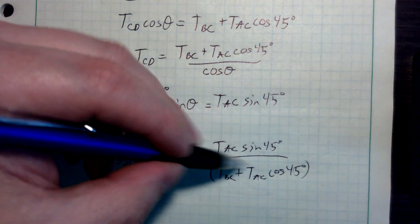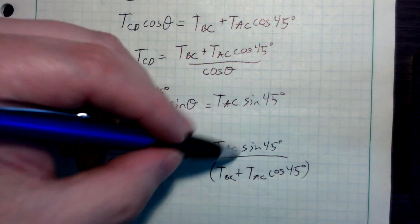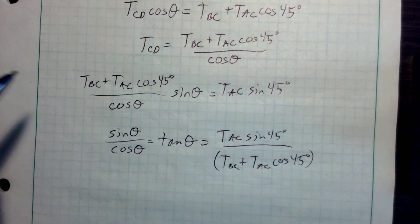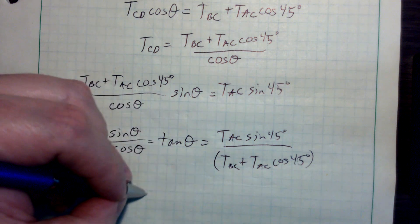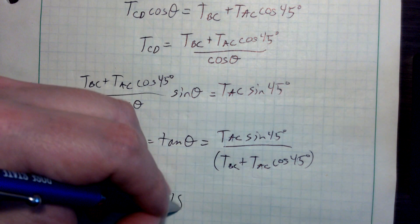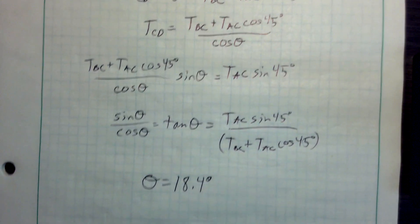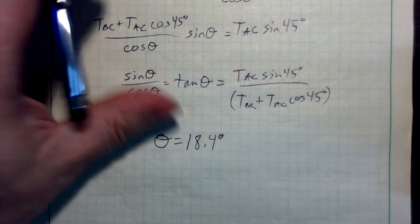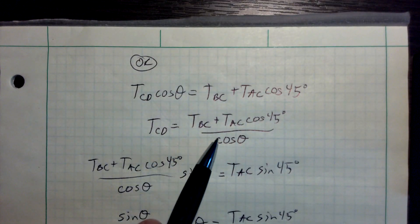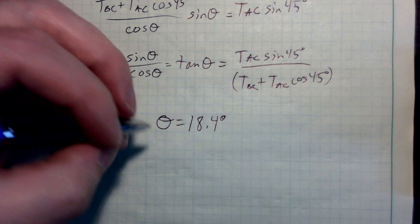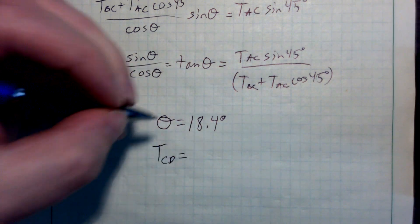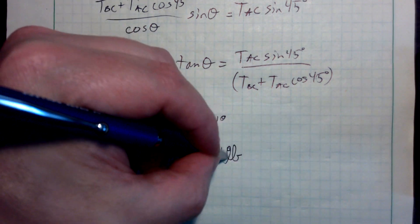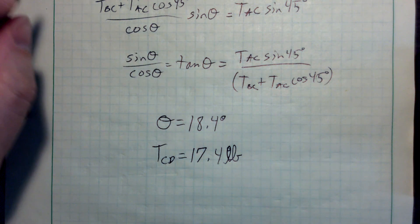Now I can calculate that ratio and take the arc tangent to get theta. Theta comes out to 18.4 degrees. Plugging that back into one of the earlier equations gives TCD equals 17.4 pounds. Those are my final values.